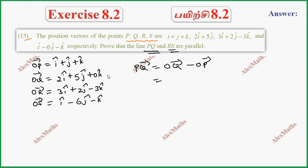So, OQ minus OP - after subtraction, we get 1I, 4J minus 1K.